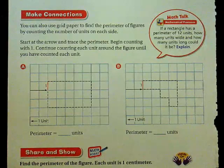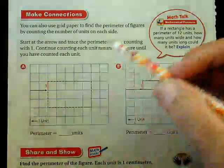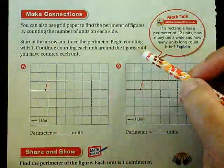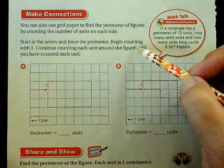You're not counting squares. You're counting side lengths. So let's try a couple together. It says start at the arrow and trace the perimeter. Begin counting with one.